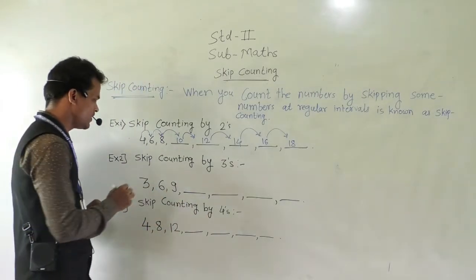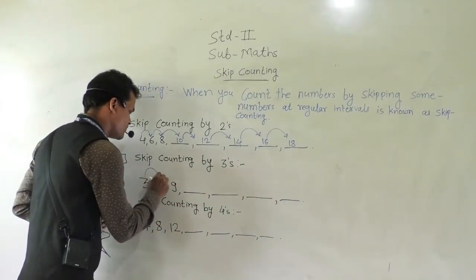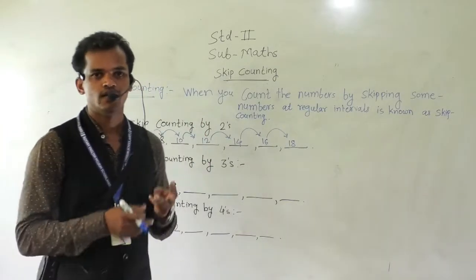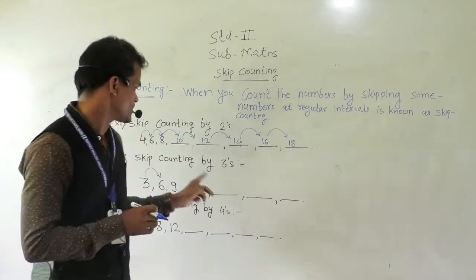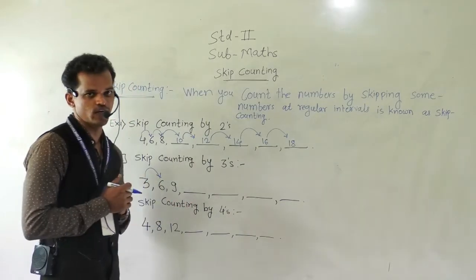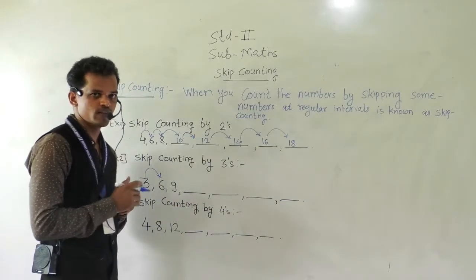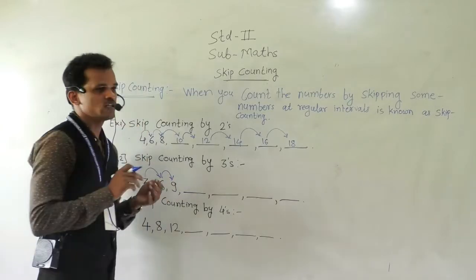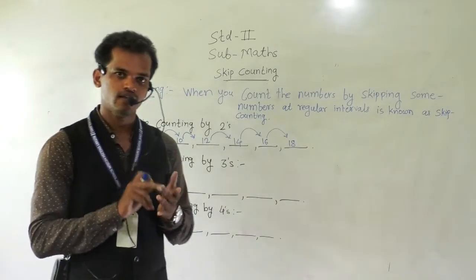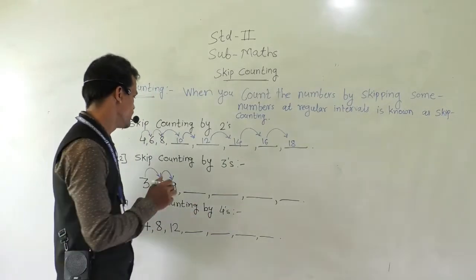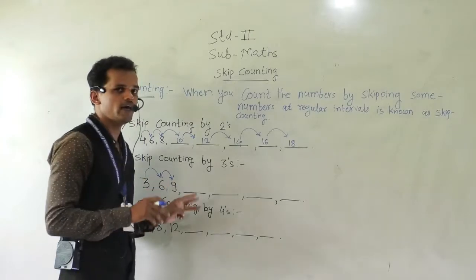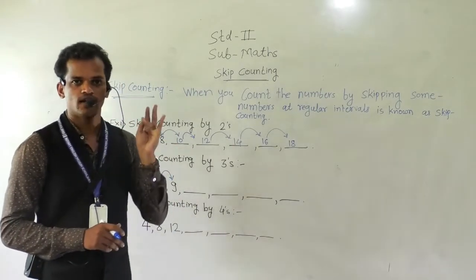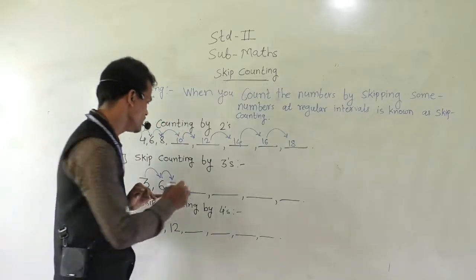So 3 is given, so 3 plus 3. You count forward by 3: 4, 5, 6. So 6 is written here. Then again add 3 into 6: 7, 8, 9. So 9 is written here. Now again add 3 into 9: 10, 11, 12. So here 12 will come.